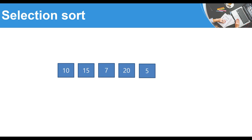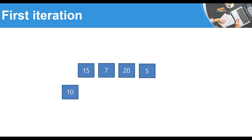We will need two different loops. The first loop is what we'll call the first iteration, second iteration, and so on, while the second loop — the inner loop — is what we use to compare the numbers. In the first iteration, we start with the first element, which is 10, and we compare 10 with each element in the remaining array.